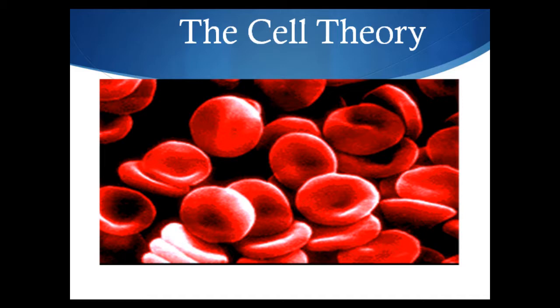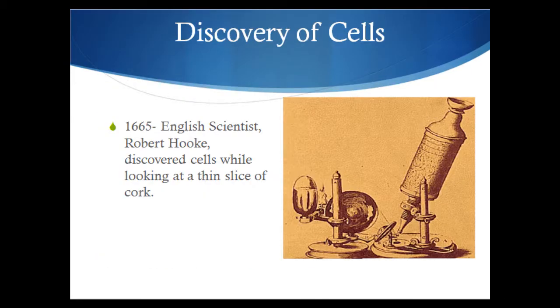Cell theory is the scientific theory that describes the properties of cells — the structure, the function, how they operate inside living things. Now, cell theory is made up of three tenets, and another word for that might be beliefs or principles. We're going to discuss these once you have some background knowledge. So what we're going to do first is discuss six main scientists who are responsible for gathering and discovering the information that was needed to build cell theory.